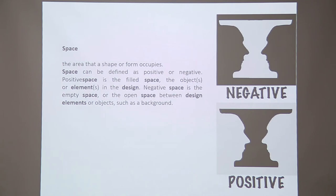When you look at the image over here, positive space is where the pyramid and the inverted pyramid are — that is known as positive space — whereas your negative space is the empty image between the two human figures in the center. That is known as your negative space. So, you always need to have a positive space rather than your negative space.